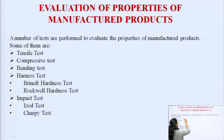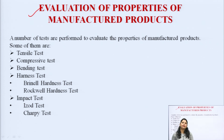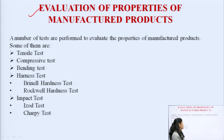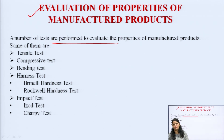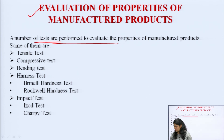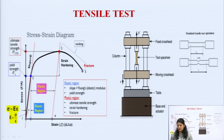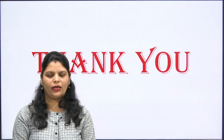The next topic is the evaluation of properties of manufacturing products. After manufacturing a product, we need to test whether it is suitable for its purpose and has the required properties. A number of tests will be performed — these will be discussed in detail in the next lecture. First we will discuss the tensile test. That is all for today's lecture. Thank you so much.